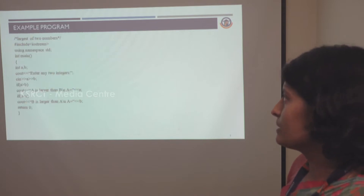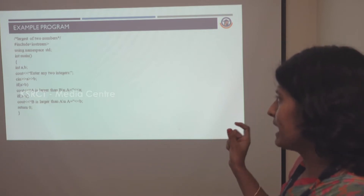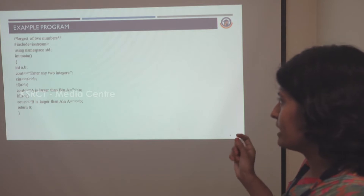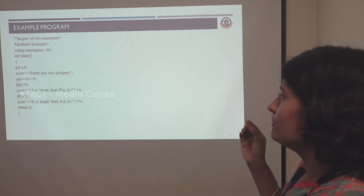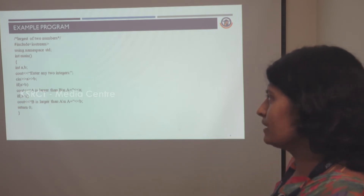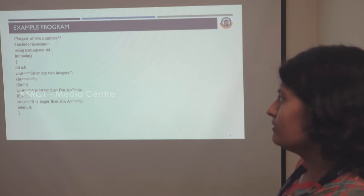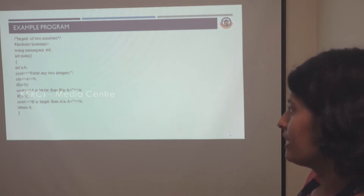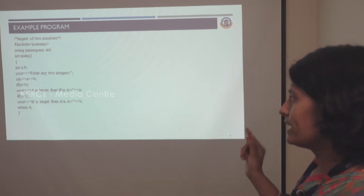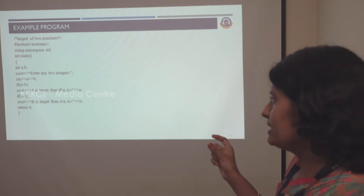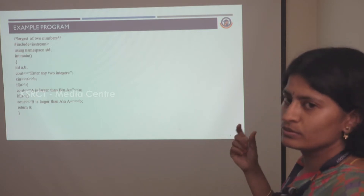Next, we are going to see the example program for the if statement. We have declared two variables a and b and prompted the user to enter any two integers. Let us assume the value of a is 10 and b is 5. Inside the if statement, we check if a is greater than b. If the condition is true, it will print 'a is greater than b, a equals 10.' If the condition is false, it will print 'b is larger than a.'